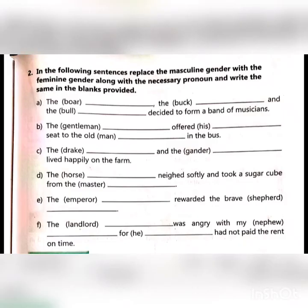Turn to page 49 for your assignment. Let's do Exercise 2. In the following sentences, replace the masculine gender with the feminine gender, along with the necessary pronoun, and write the same in the blanks provided. Inside the bracket, we have masculine gender, so you are going to change this masculine gender into feminine gender.